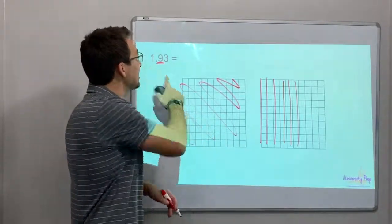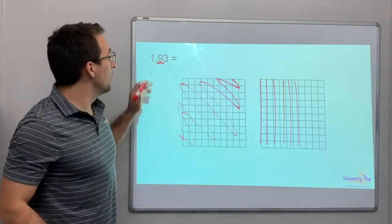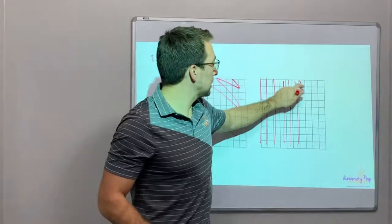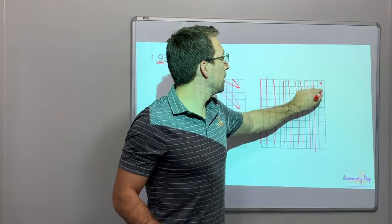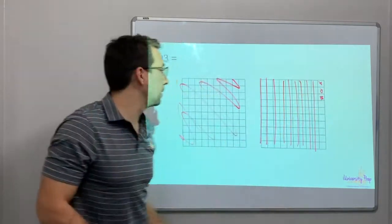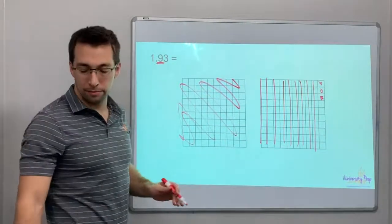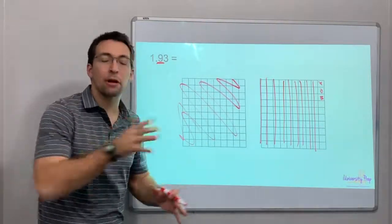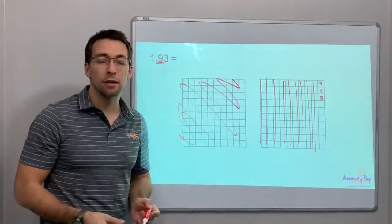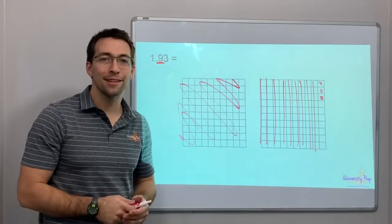And then last, one ninety-three. One, six, seven, eight, nine. One, two, three. One ninety-three. Alright. Hope you guys have enjoyed the video. Hope you better understand models, base ten blocks. Have a great day. We'll see you next time.